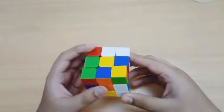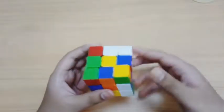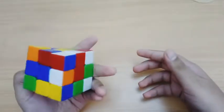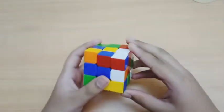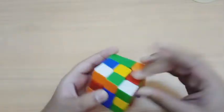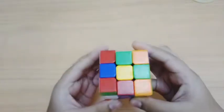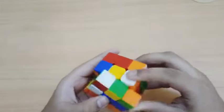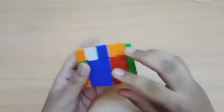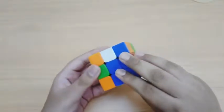The first step of the Petrus method is to make a 2x2x2 block. The red and blue side looks good. So here is our 2x2x2 block.